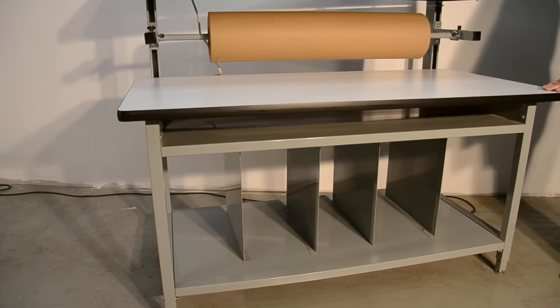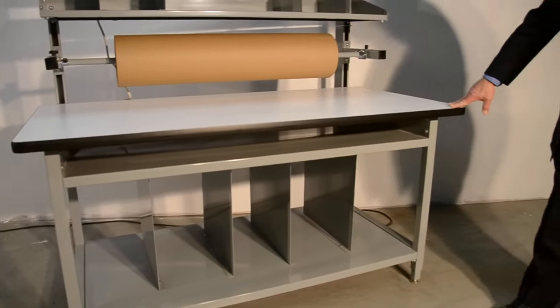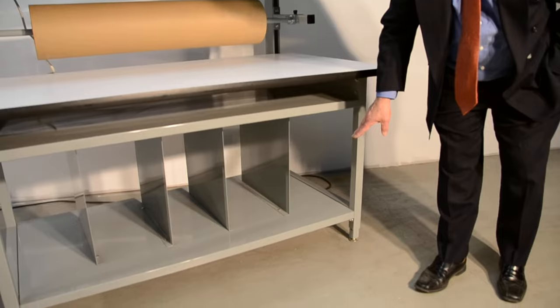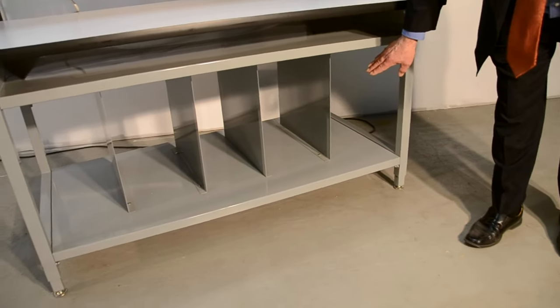Now, the accessories that we show on this today, we're showing the plastic laminate work surface. We obviously have a left leg and a right leg. We have a lower shelf with an 18-inch by 18-inch divider.